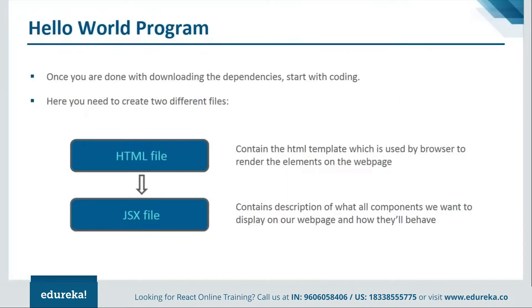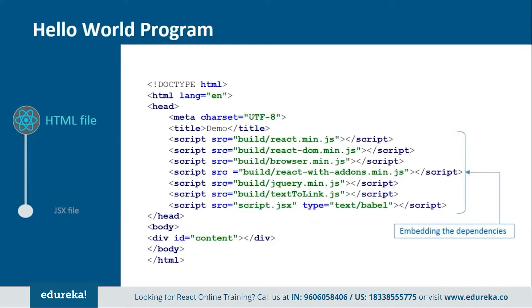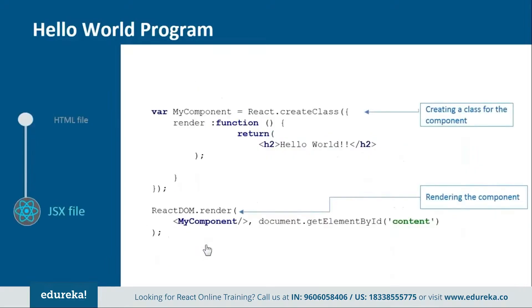For the program using the embedding method you will need one HTML file and one JSX file. In this HTML file you have to explicitly add all the dependencies, unlike the previous npm method where everything was handled implicitly by npm. Here you need to add them explicitly. You can see I've added my script file pointing to script.jsx where my React code lives, and I'm also providing one div tag with an id so I can render my component using that id later.